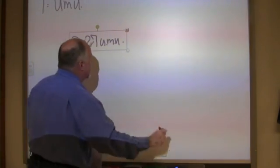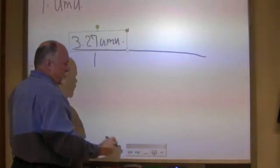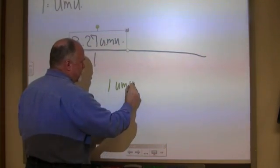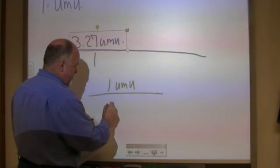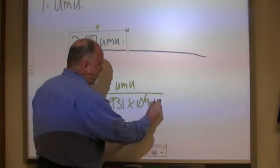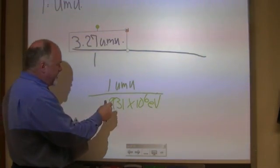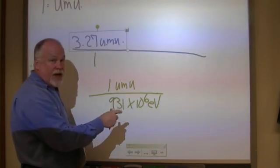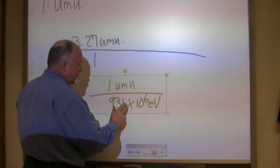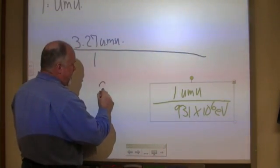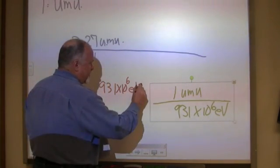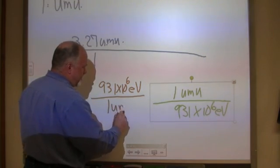Again, we want to multiply this by one. So we look up our conversion unit. One universal mass unit is equal to 931 times 10 to the 6 electron volts, or 9.31 times 10 to the 2 MeVs. So now we can write this as 931 times 10 to the 6 EVs as the same as one universal mass unit.